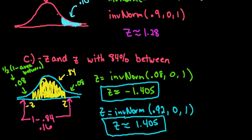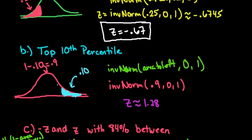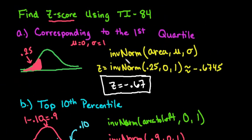Just to recap: to get to inverse norm, it's 2nd then VARS, then choose option 3 — inverse norm. You have to know the area, the mean, and the standard deviation. Thanks for watching, and please remember to check out all of the other video content.